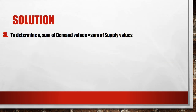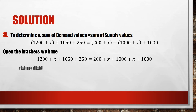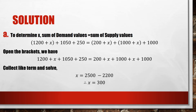To determine the value of x, you should know that demand equals supply — the values on the demand row equal the values on the supply column. So: 1200 + x + 1050 + 250 equals 200 + x + 1000 + 1000. Opening the brackets and collecting like terms — the x values and the numeric values — we get x equals 300. Get your pen and paper and work it out. The value of x is 300.